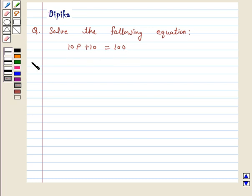So let's start the solution. Our given equation is 10p plus 10 is equal to 100. Now we want to separate the variable p.